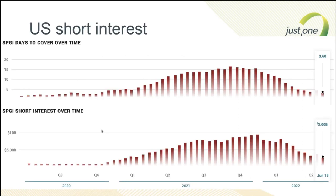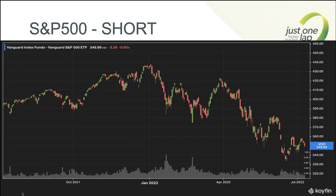A quick look at US short interest to mid-June: days to cover is 3.6, and short interest over time is around 3 billion — both relatively low. I expect those to start rising. Short interest in 2020 was surprisingly low for Q3 and Q4 by which point the market had started to rally, but look at the short interest buildup in Q1 and Q2 of that year as the market was going crazy.